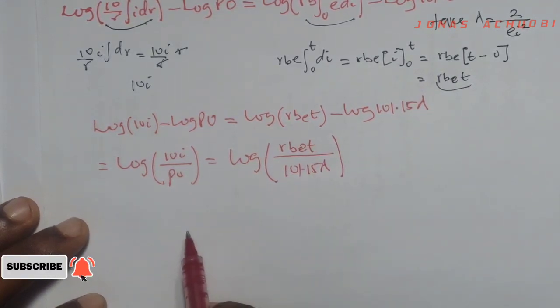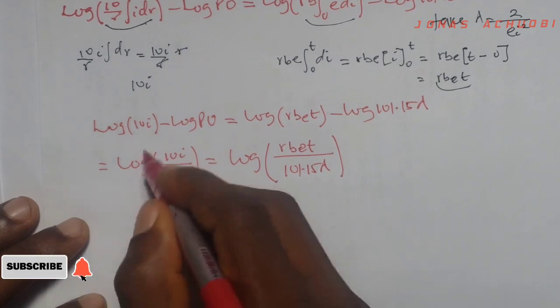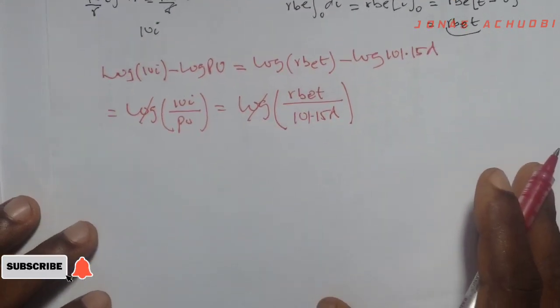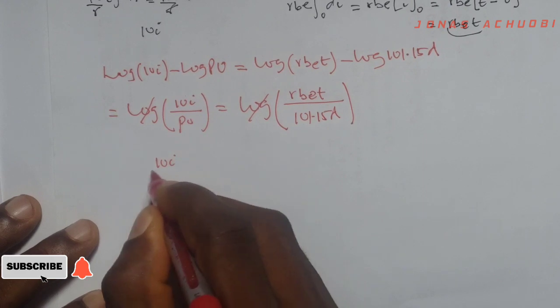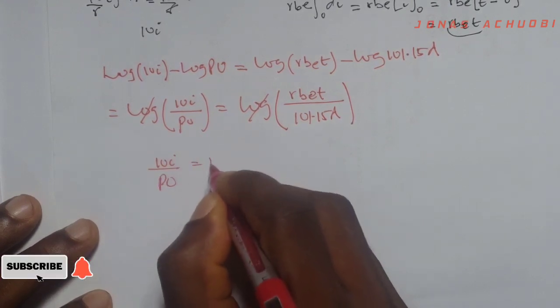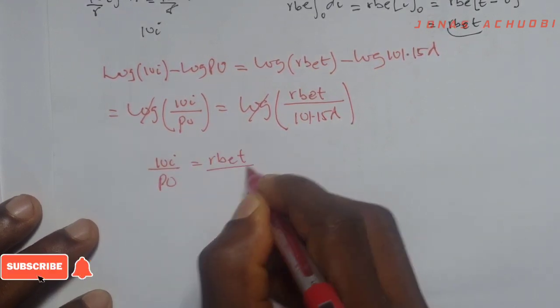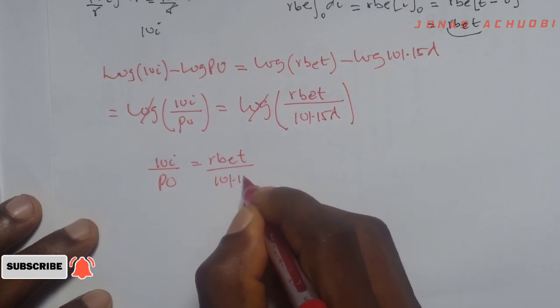Since we have logs on both sides, we can take exponential on both sides and the logs will cancel off. And what we have left is 10i over po, equal to rbet over 101.15 lambda.